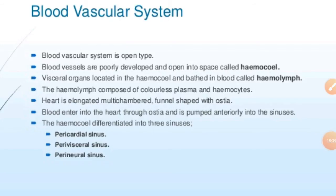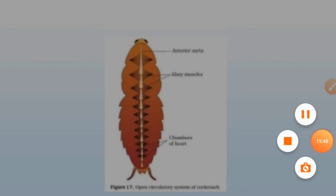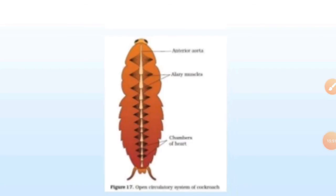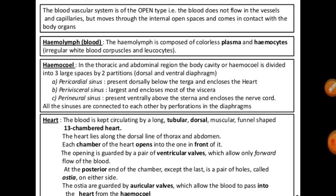Now we talk about the blood vascular system, or circulatory system. The circulatory system of the cockroach is the open type — they do not have distinct blood vessels or arteries. Blood vessels are poorly developed and blood flows freely into the body cavity called the haemocoel.